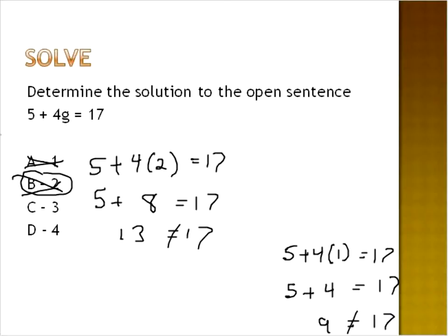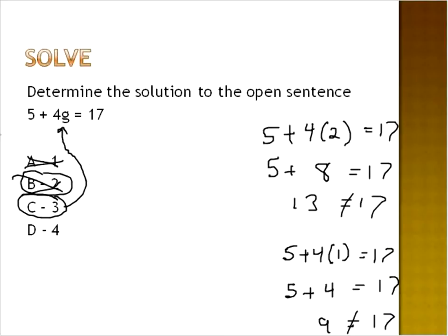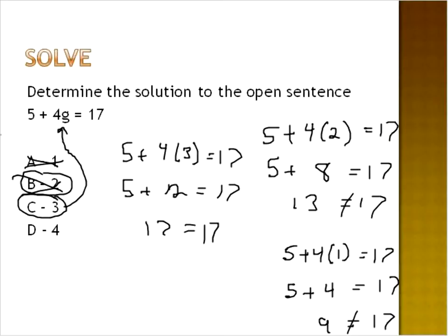The next step is to try three. Taking the value of three and plugging it into the equation: five plus four times three is seventeen. Five plus twelve is seventeen. Seventeen is equal to seventeen — that is the correct answer. We could check D as well, but we don't need to. We found our correct solution, so we're done.